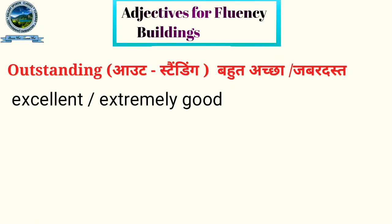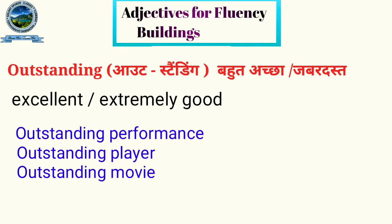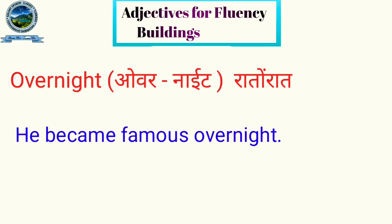The first adjective is 'outstanding.' Outstanding means very good and wonderful. In place of outstanding, you can use 'excellent' or 'extremely good.' Examples: outstanding performance, outstanding player, outstanding movie. You can also say very good performance, very good player.